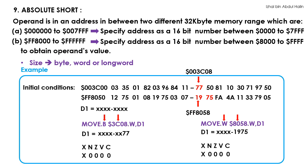As a summary for this addressing mode, you just have to specify the address of the operand as a word-long hexadecimal number with a dot W at the back. The microprocessor will pack 0s in front of the number to make it 32 bits if the address you specified is in between address 0 to 7FFF, or it will be packed with 1s if the operand you desire is in between addresses FF8000 and FFFFFF. This packing of either 0s or 1s is known as sign extension. Let's move on.